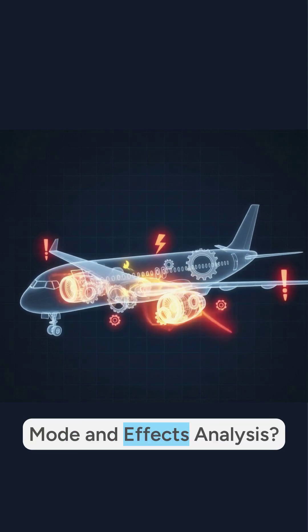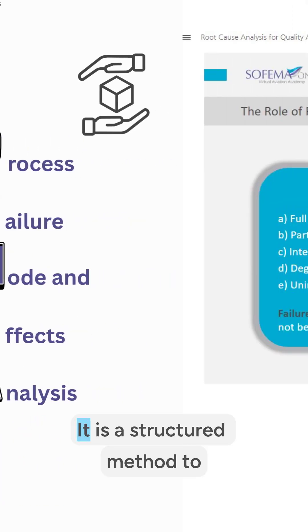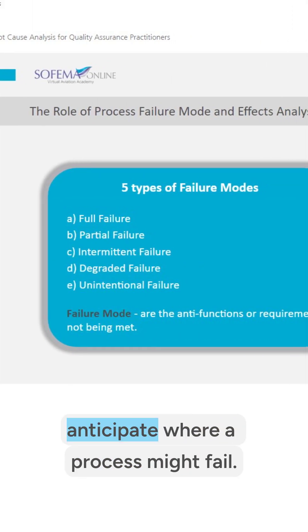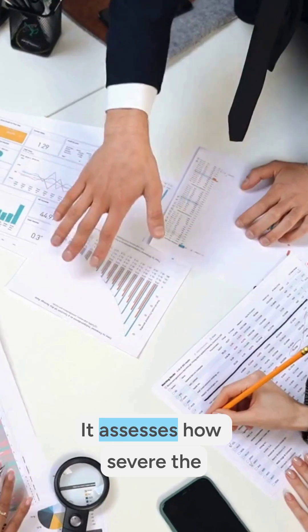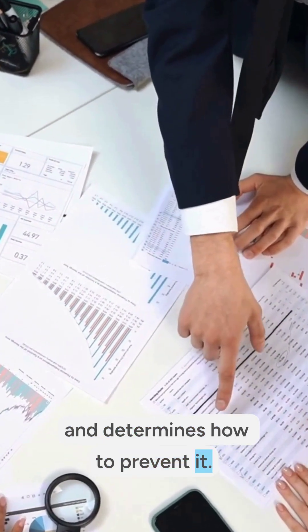Remember Process Failure Mode and Effects Analysis? It is a structured method to anticipate where a process might fail. It assesses how severe the consequences could be and determines how to prevent it.